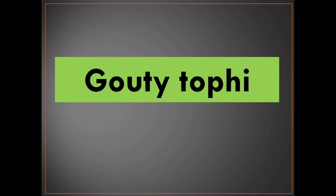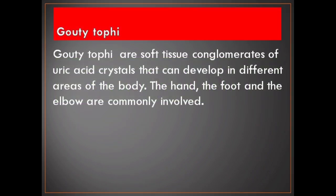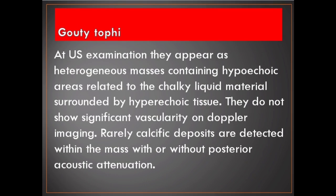Gouty tophi are soft tissue conglomerates of uric acid crystals that can develop in different areas of the body. The hand, foot and elbow are commonly involved. At ultrasound examination they appear as heterogeneous masses containing hypoechoic areas related to the chalky liquid material surrounded by hyperechoic tissue. They do not show significant vascularity on Doppler imaging. Rarely, calcific deposits are detected within the mass with or without posterior acoustic attenuation.